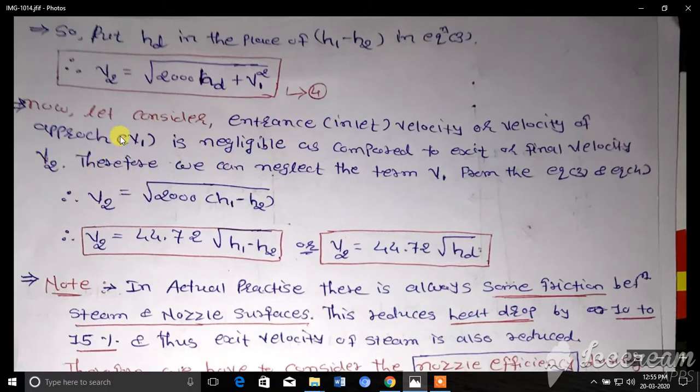So V2 is very much higher than V1, so we can easily neglect this term V1 from equations 3 and 4. These equations can be rewritten as V2 equals square root of 2000 H1 minus H2. The square root of 2000 is 44.72, so we can rewrite this equation as 44.72 times the square root of H1 minus H2, or we can rewrite H1 minus H2 as HD.